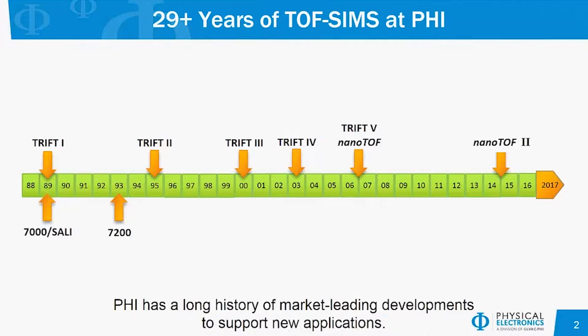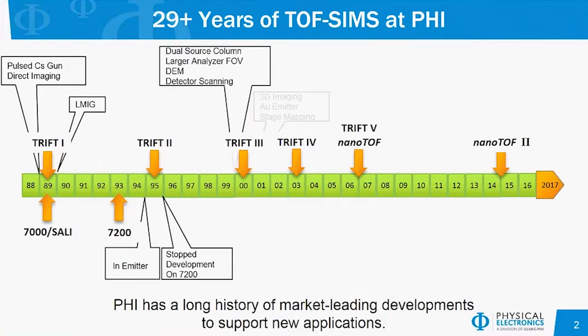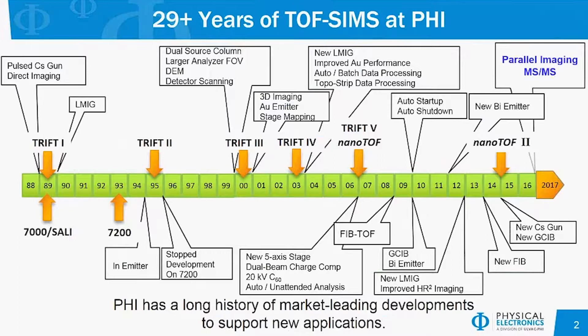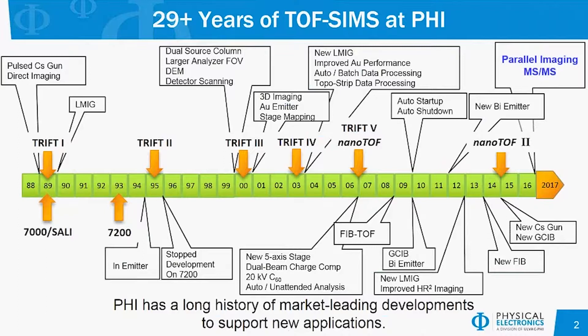To start things off, Physical Electronics has been designing and producing TOF-SIMS instruments since the late 1980s. We've got quite a long history of market-leading developments in TOF-SIMS applications and the hardware required for new applications. That began in the late 80s with a Reflectron-based TOF-SIMS instrument and later with the TRIFT-based instrument, as well as new primary ion sources and applications such as FIB-TOF.